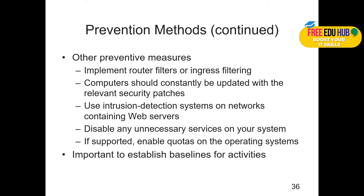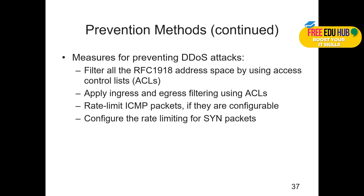Other preventive measures include implementing router filters or ingress filtering for any traffic coming into the network. Computers should constantly be updated with relevant security updates and patches, which are released frequently now by Microsoft, especially for Windows 10 and 11. Use intrusion detection systems (IDS) or intrusion prevention systems (IPS). Disable unnecessary services on the system, or if supported, enable quotas on the operating system. It is also important to establish baseline activities. Filtering all RFC 1918 address space using access control lists is another method.